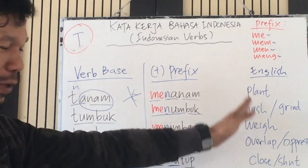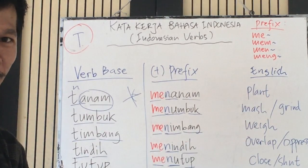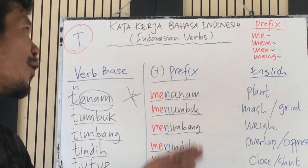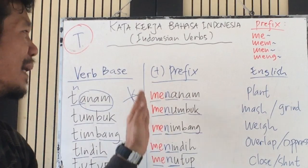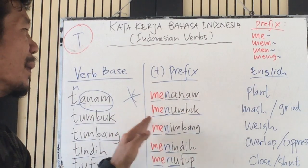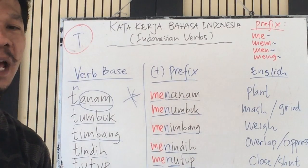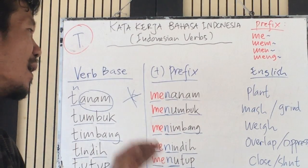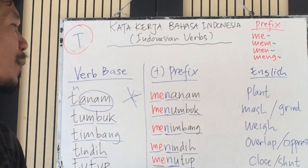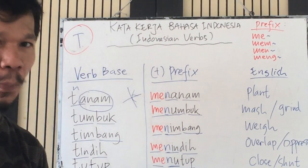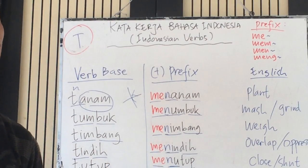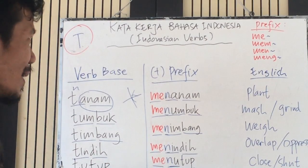I'll write down the translations into English so we can compare and know the meaning of these verbs. Menanam means 'plant'. Menumbuk means 'mash or grind'. Menimbang means 'weigh'. Menindih means 'overlap or oppress'. Menutup means 'close or shut'.